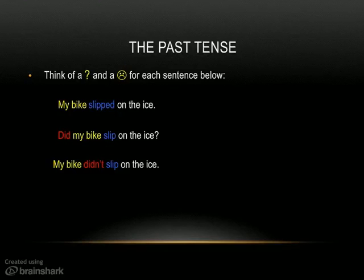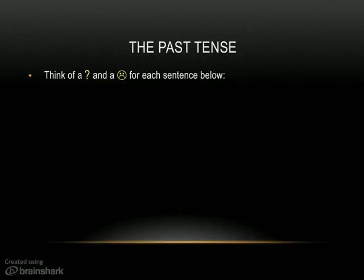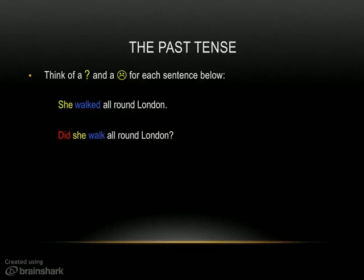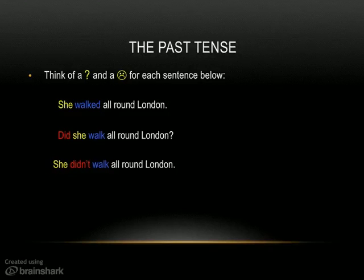Next example: She walked all round London. What is the question? Did she walk all round London? 'Walk' here is het hele werkwoord. And the negative: She didn't walk all round London. Ik hoop dat je nu een beetje de smaak te pakken hebt, en dat het steeds simpeler wordt. She walked all round London — Did she walk all round London? Yes, she did. Or no, she didn't — she didn't walk all round London.